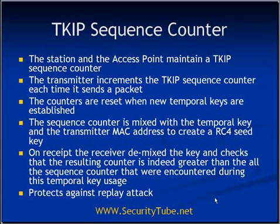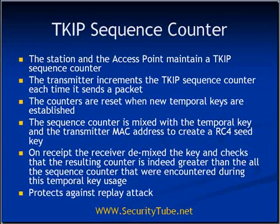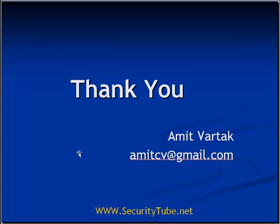So, the IV or TSC has two important implications. First, it is used while generating the keystream from the key — it serves as the RC4 seed. Second, since the TSC is a monotonically increasing function, it is used for replay protection. These are the two main implications of the TSC and IV in TKIP. In the next video, I will be talking more about how encryption and decryption actually take place in TKIP. Thank you.